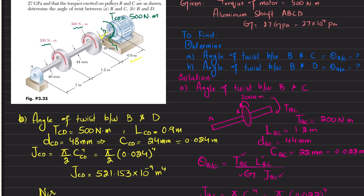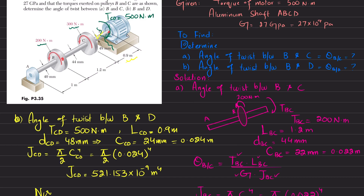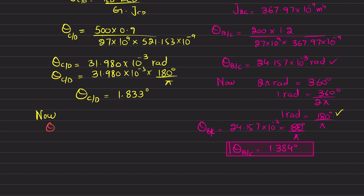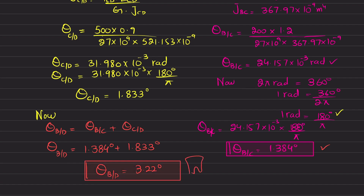The angle of twist of B with respect to D, θ_B/D, equals the angle of twist between B and C plus the angle of twist between C and D. So θ_B/D = 1.384° + 1.833° = 3.22 degrees. This is the answer to our second part.